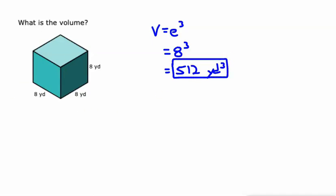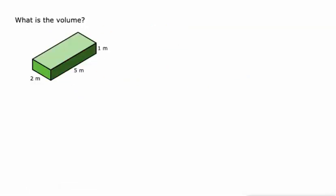So the other formula would work too. If we call this the base, the area of it would be eight squared, which is 64. And then we multiply by the height, which is another eight and 64 times eight would give us 512 as well. This is just kind of a shortcut. But here we go, we're gonna do that on this one.